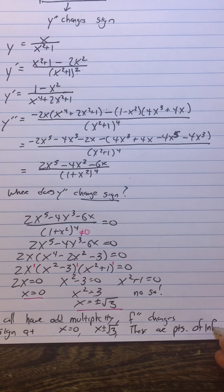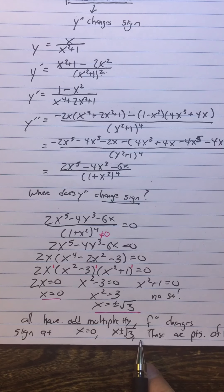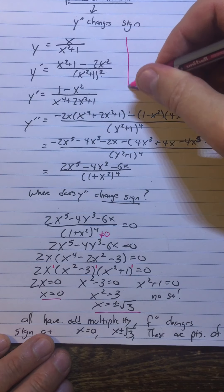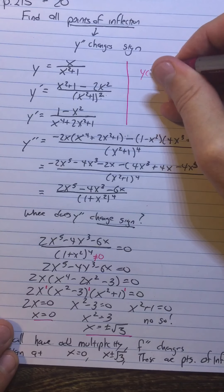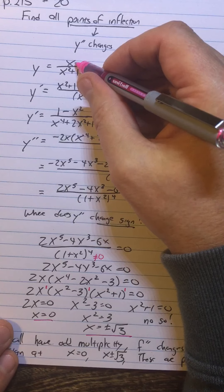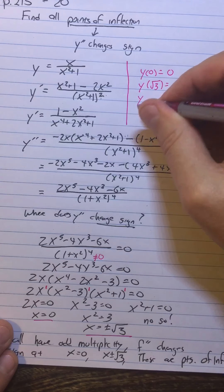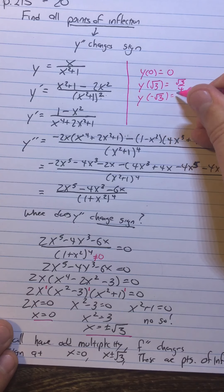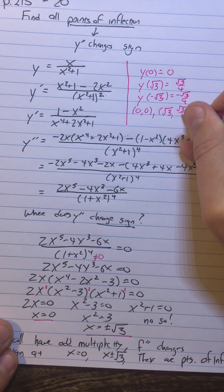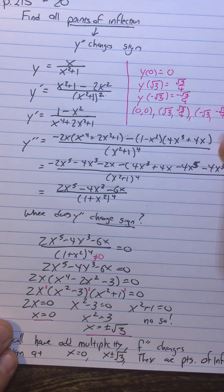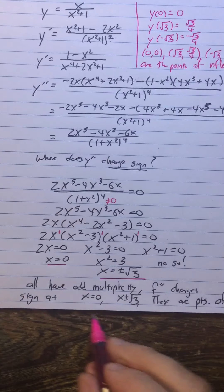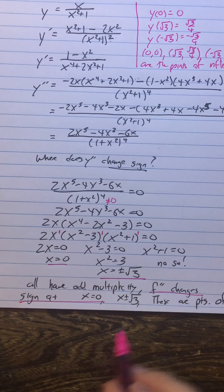I haven't really found the points of inflection yet — I've found where they are. Now I need to go back to the original function for the Y coordinates. Y of 0 equals 0. Y of square root 3 is square root 3 over (3 plus 1), so square root 3 over 4. And Y of negative square root 3 is negative square root 3 over 4. So the points of inflection are (0, 0), (square root 3, square root 3 over 4), and (negative square root 3, negative square root 3 over 4). My justification is that F double prime changes sign at all of those points.